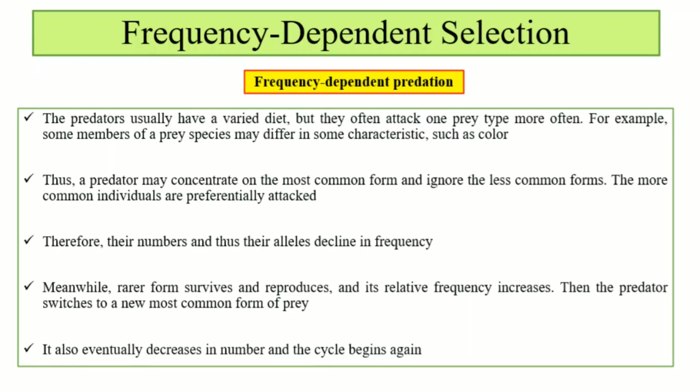And the predator, when the rare form becomes common, will switch to the new most common form of prey. It eventually decreases in number and then the cycle begins again.